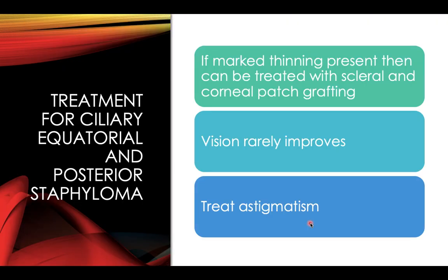For treatment of ciliary, equatorial, and posterior staphyloma, if marked thinning is present, scleral and/or corneal patch grafting can be performed as needed. However, vision rarely improves with this treatment. The astigmatism present must be treated, as that helps vision to some extent.